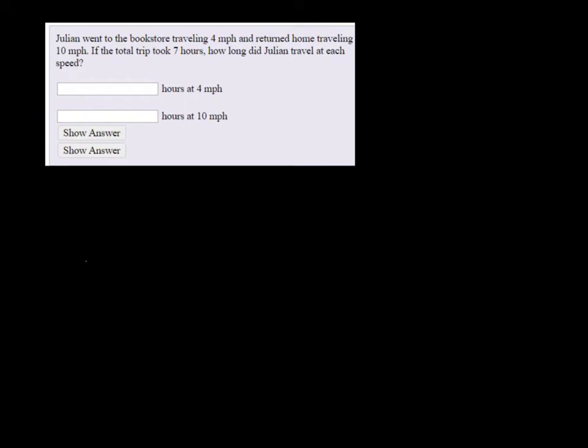Julian went to the bookstore traveling four miles per hour and returned home traveling ten miles per hour. If the total trip took seven hours, how long did Julian travel at each speed?